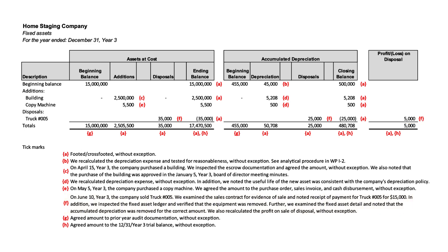As noted earlier, for the beginning balances, tick mark G references the prior year audit. Finally, the ending balances — $17.4 million of assets and about $480,000 of accumulated depreciation, as well as the $5,000 gain on sale — are all traced back to the trial balance without exception. That gives you a walkthrough of a very typical fixed asset work paper.